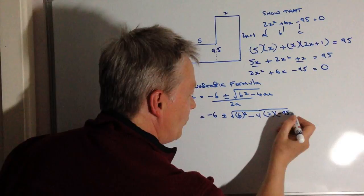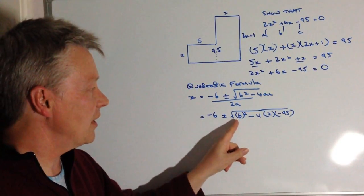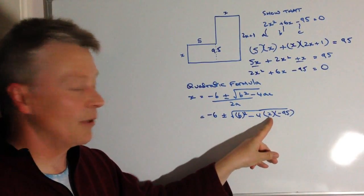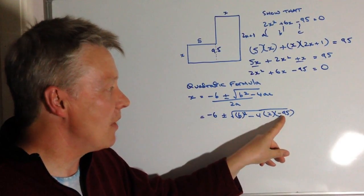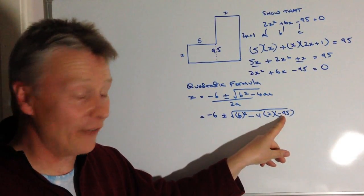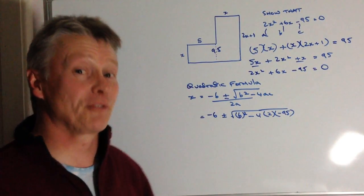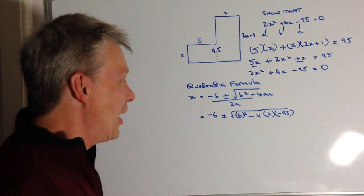So what I end up with, actually, is this top end is going to be 6 squared, which is 36. And then minus 4 times positive 2 is minus 8. And then minus 8 times minus 95 is going to be a positive value. And actually, I think it works out 760 because I can just refer to my notes. Yes, it does.